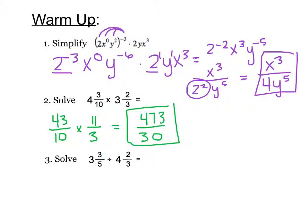Our final problem is dividing fractions. Once again, our first step is to change them into improper fractions. So we have 18 over 5 divided by 14 over 3. Now we keep switch flip, so 18 over 5 times 3 over 14. Here I like to see if anything simplifies. 18 and 14 both divide by 2, so we can change them into 9 and 7.